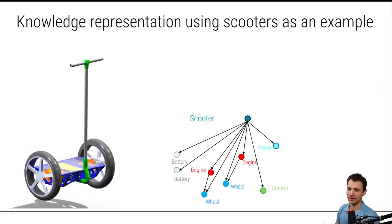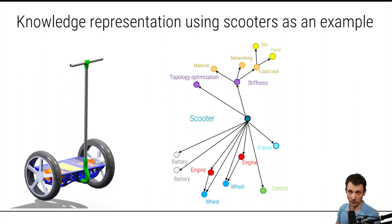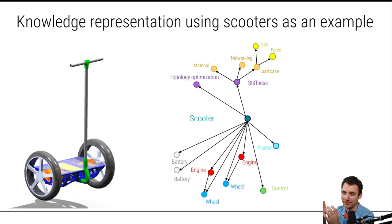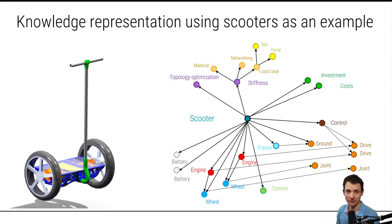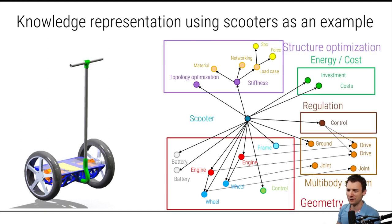Now, knowledge representation using a scooter as an example. You have a scooter as a product with different components like batteries, engines, wheels, control units, and the frame. If you want to perform a topology optimization, stiffness is important, material selection is important, and meshing is important. You also have load cases with SPCs and forces at a static load case. But that's just a small part of the model complexity — you can also have multi-body dynamics with grounds, joints, drives, control units, investment view, costs, and manufacturing costs. You have different disciplines, and all relate to that product, the scooter.